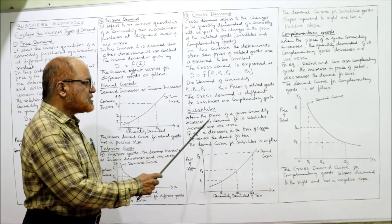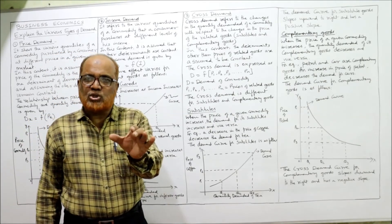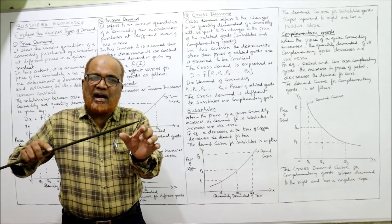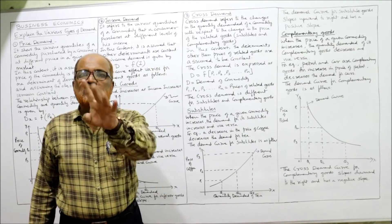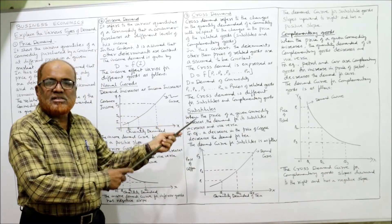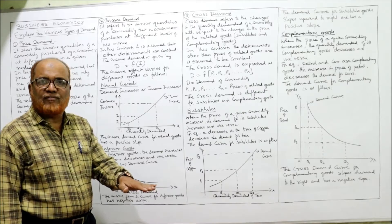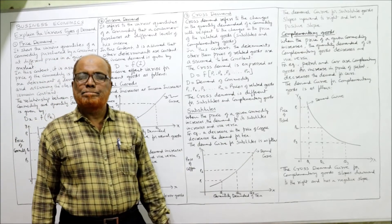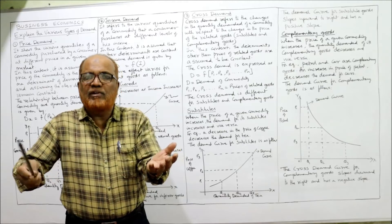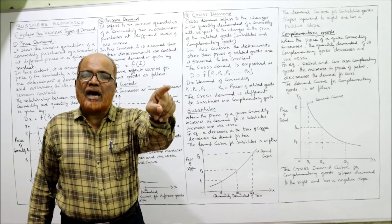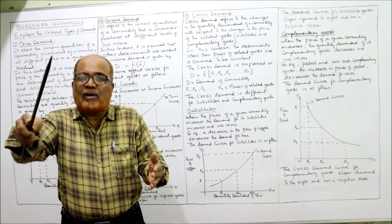For substitute goods, there is a positive relationship. When the price of a given commodity increases, demand for its substitute also increases. For example, a decrease in the price of coffee will decrease the demand for tea. When coffee becomes cheaper, people switch to coffee and demand for tea decreases. Coffee and tea are substitutes — people consume either one.